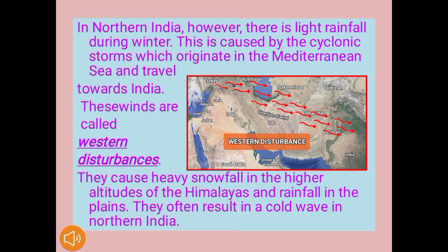In northern India, there is light rainfall during winter. This is caused by cyclonic storms which originate in the Mediterranean Sea and travel towards India. These winds are called western disturbances. You can see on the map what the western disturbances are. They cause heavy snowfall in the higher altitudes of the Himalayas and rainfall in the plains, and often result in a cold wave in northern India. Remember the term western disturbances.